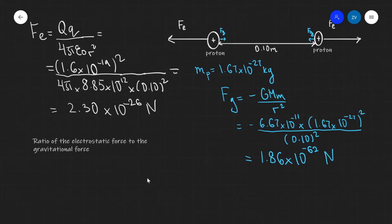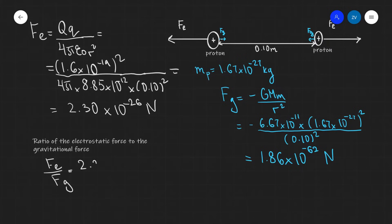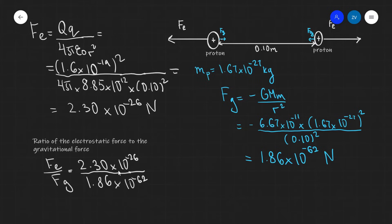A typical exam question asks for the ratio of the electrostatic force to the gravitational force. Dividing 2.3 × 10⁻²⁶ N by 1.86 × 10⁻⁶² N gives approximately 1.24 × 10³⁶, which is an incredible factor demonstrating just how much stronger the electrical force is compared to the gravitational force.